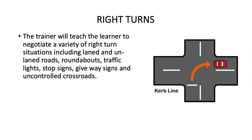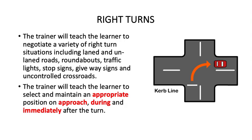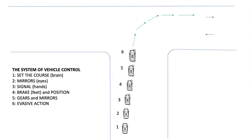Right turns. The trainer will teach the learner to negotiate a variety of right turn situations, including laned and unlaned roads, roundabouts, traffic lights, stop signs, give way signs, and uncontrolled intersection crossroads. The trainer will teach the learner to select and maintain an appropriate position on approach, during, and immediately after the turn. Let's look at the system of vehicle control applied to this example: Step 1 — set the course; Step 2 — check the mirrors; Step 3 — signal; Step 4 — brake and position; Step 5 — gears and mirrors; Step 6 — evasive action.